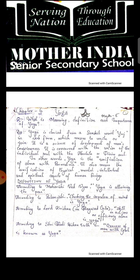तो योगा एक Sanskrit word से derived हुआ है। यो (Yuj), जिसका verb form देखो तो वो होता है 'to unite or to join' - किसी चीज़ को unite करना या किसी चीज़ के साथ join होना. It is a science of development of man's consciousness. इसको आप ऐसे भी define कर सकते हो कि यह एक ऐसी science होती है जिसमें development होती है man's consciousness की.